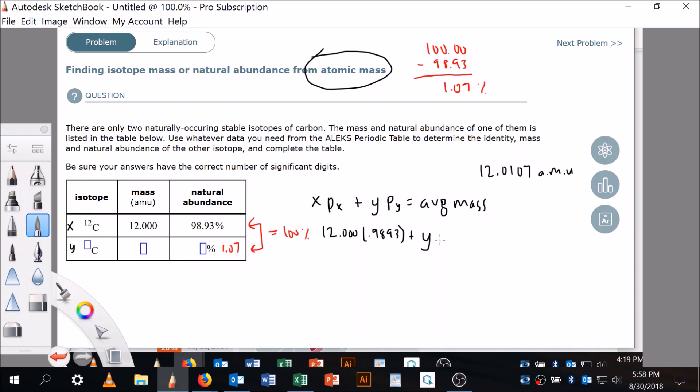Plus the other isotope, which I don't know that mass, so I'm going to call that Y times the percentage of that. I do know that it's 0.0107, is going to equal 12.0107, and I can look this up in my periodic table.